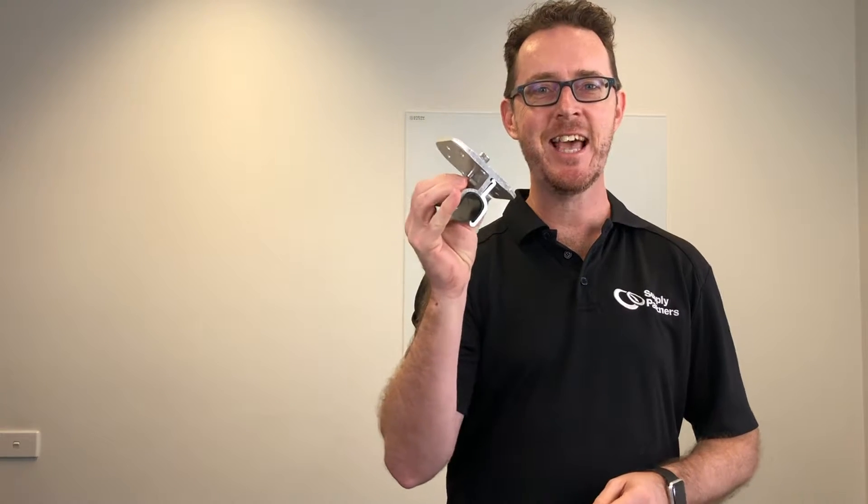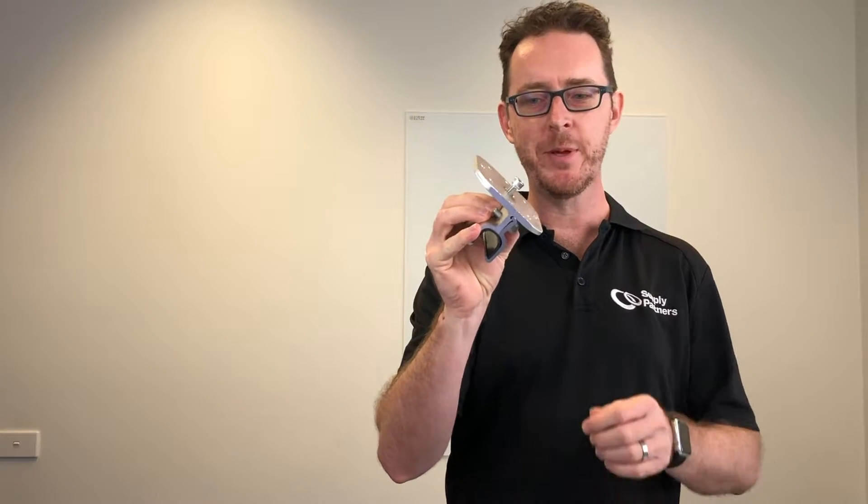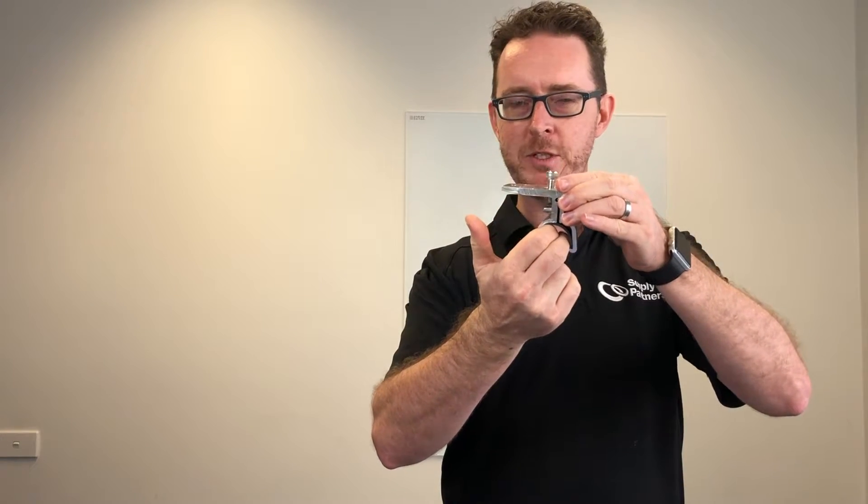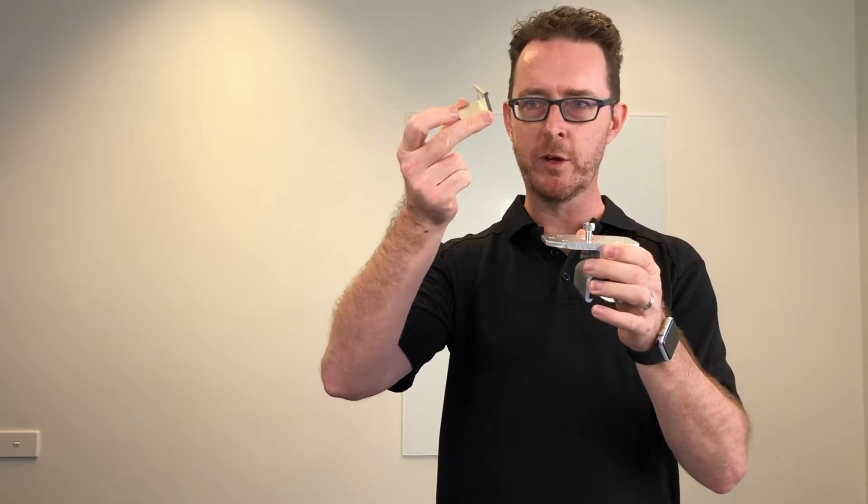What's this? This is a Clenergy Cliplock Clamp. It's designed to wrap around the roof profile, clamp it on both sides securely, and then upon which you install the rest of your racking and then your PV modules, typically used with the cross connector clamp that goes on here.